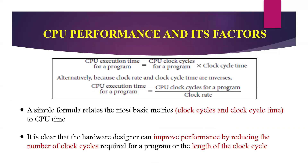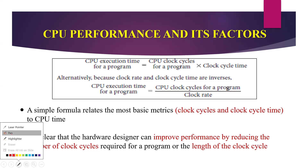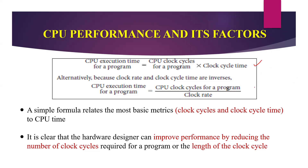The CPU execution time for a program equals CPU clock cycles for a program multiplied by the clock cycle time. Alternatively, instead of clock cycle time, we can represent it using the clock rate, because clock rate r equals 1 divided by t. So there are two equations: in terms of clock cycle time, use the first equation; in terms of clock rate, use the second — CPU execution time equals CPU clock cycles divided by clock rate. Depending on the question, you can use either one.